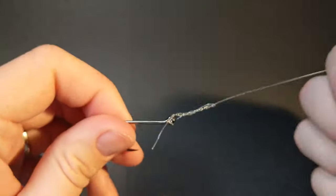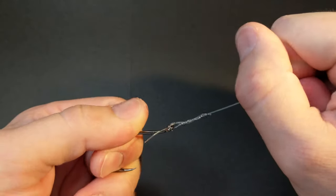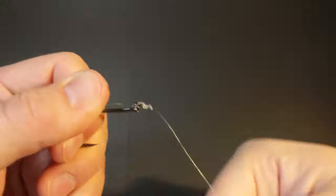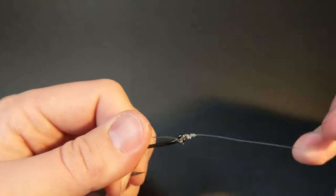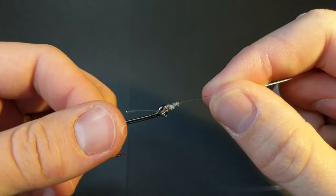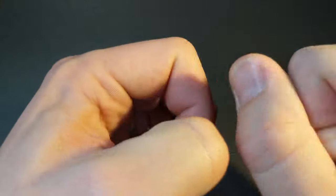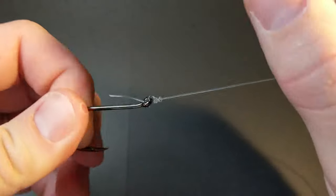Once that's wet, finish by pulling on the leader until the knot has moved its way down to the eye. Now you'll see, once it gets like this, you can use your thumbnail to pull that knot the last little bit of the way.